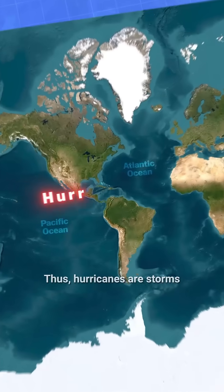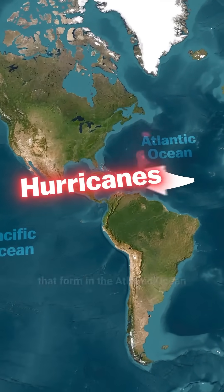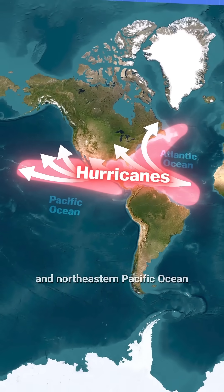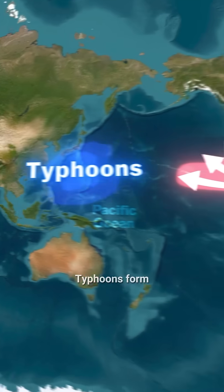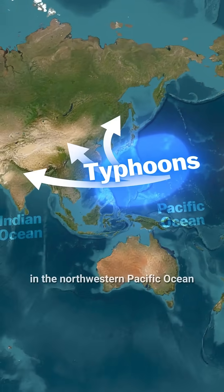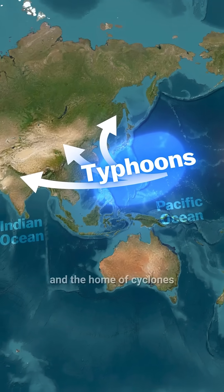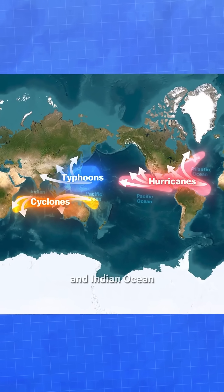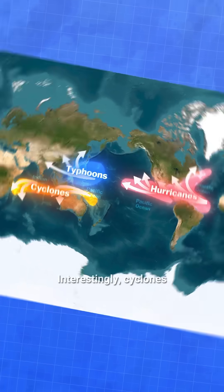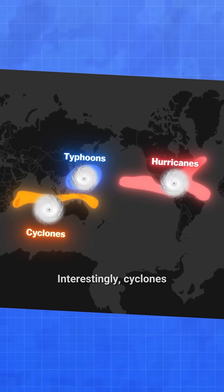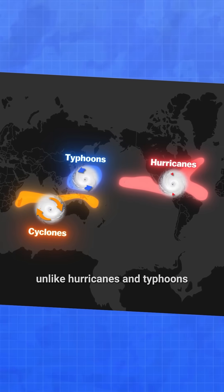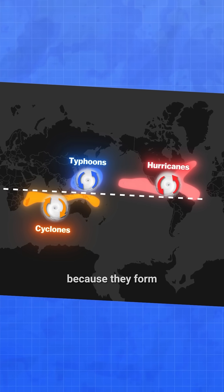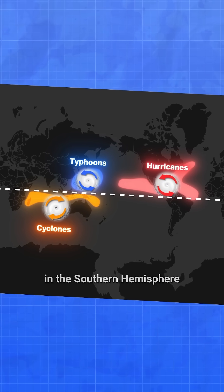Hurricanes are storms that form in the Atlantic Ocean and northeastern Pacific Ocean. Typhoons form in the northwestern Pacific Ocean, and the home of cyclones is the South Pacific and Indian Ocean. Interestingly, cyclones, unlike hurricanes and typhoons, rotate in the opposite direction because they form in the southern hemisphere.